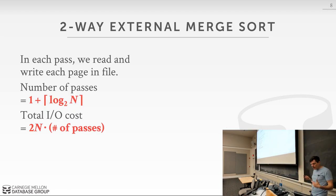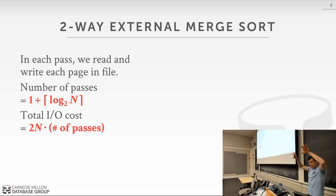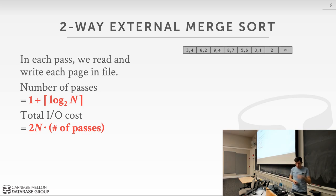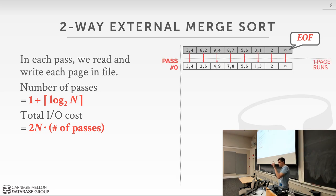This is a divide-and-conquer strategy. Rather than trying to sort everything at once like quicksort would, we sort smaller chunks and then combine them as we go along, being smart about how we read and write data. Here's our input sequence with an end-of-file marker. In the first pass we take each page, run quicksort on it, and write each of those sorted pages out.